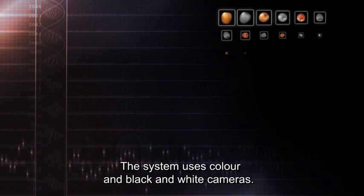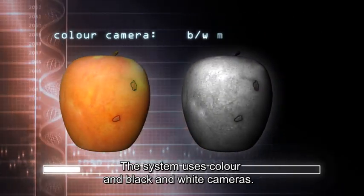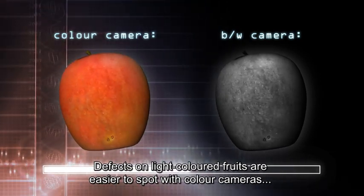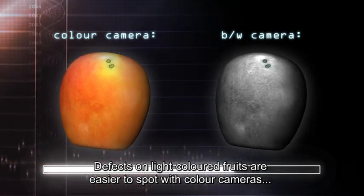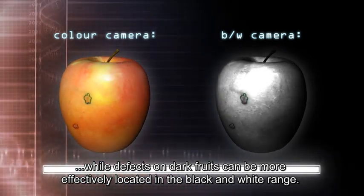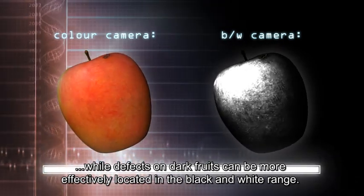The system uses both color and black and white cameras. Defects on light-colored fruits are easier to spot with color cameras, while defects on dark fruits can be more effectively located in the black and white range.